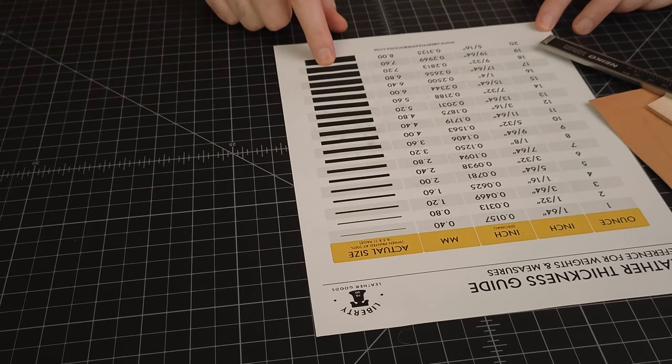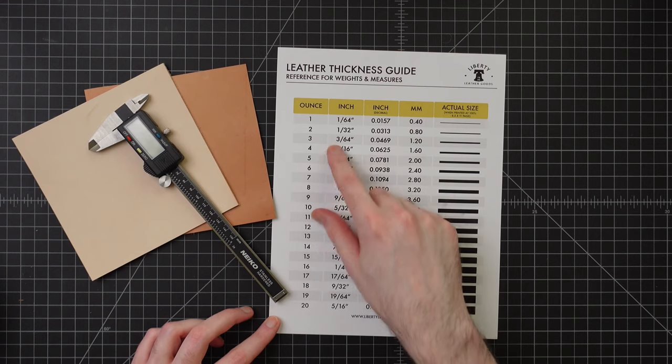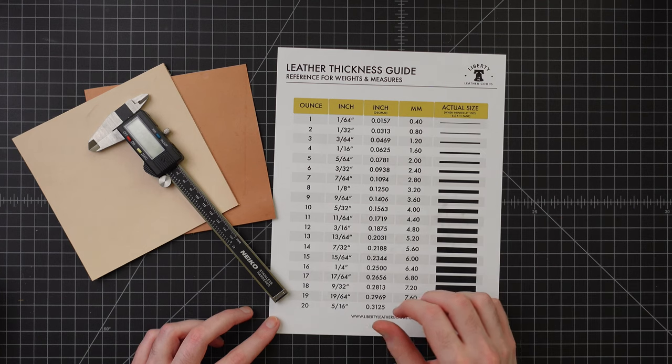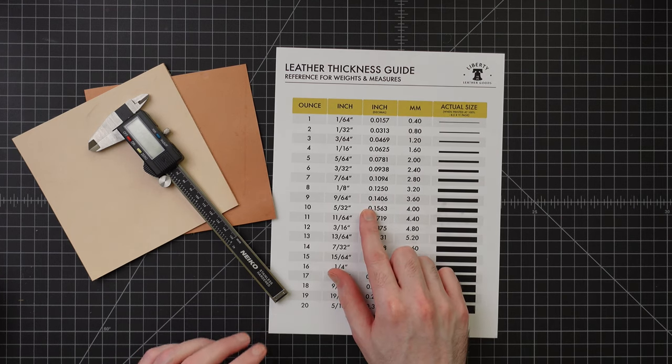You can definitely get thicker, you can even get a little thinner, but that's the general range. Most crafters are going to use between probably 2 and 14, 2 and 16 for most things. So anyway, how do we get there?